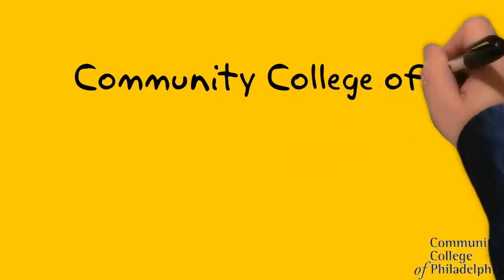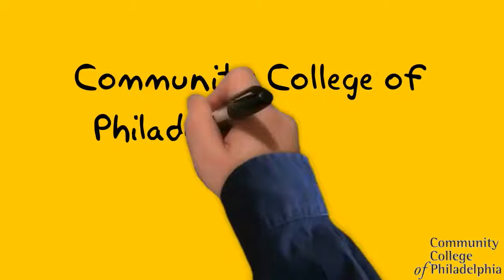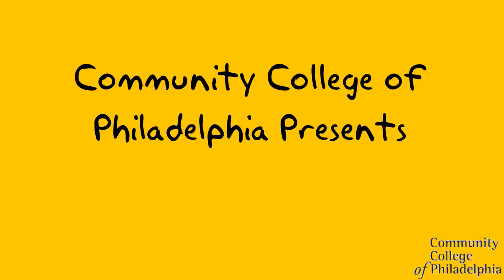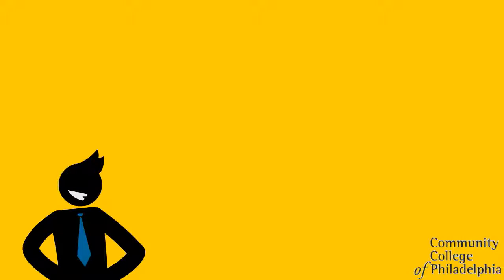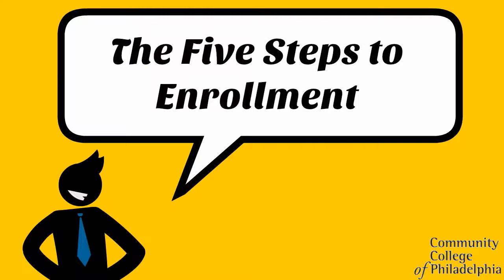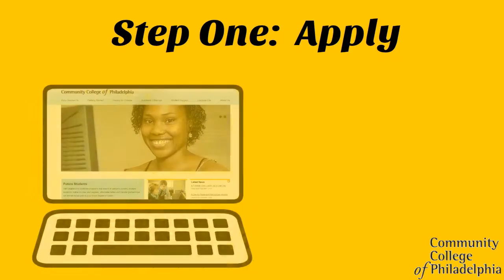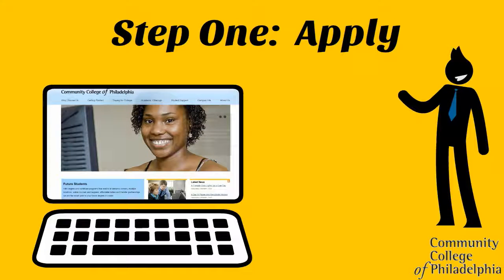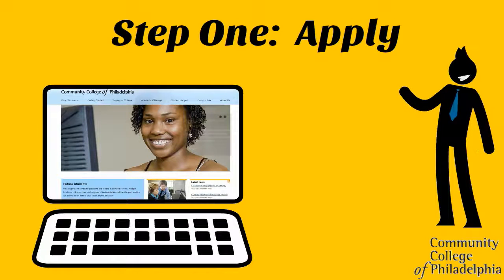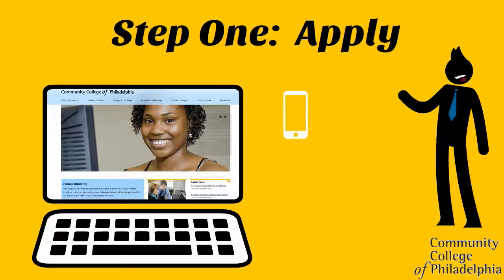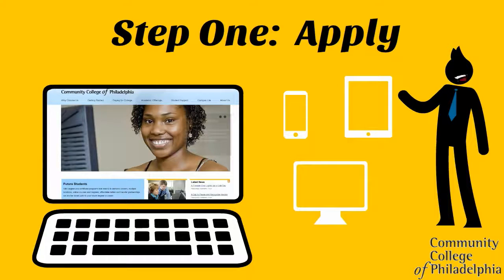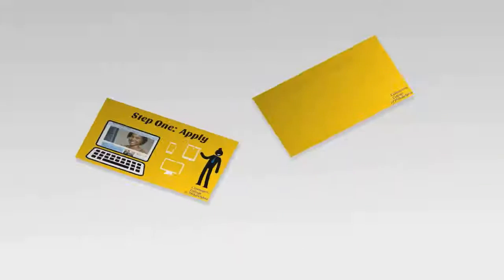Community College of Philadelphia presents the five steps to enrollment. Step 1: Applying to the college. Our free application is completed totally online using any connected device, or you can always go to one of our four campus locations.